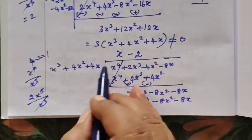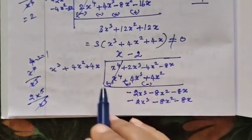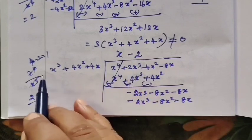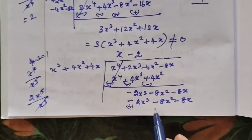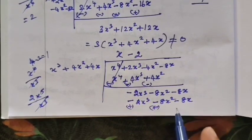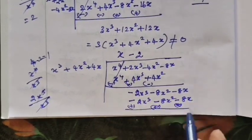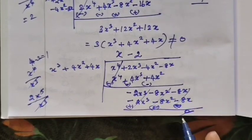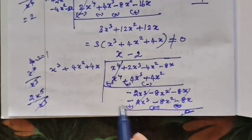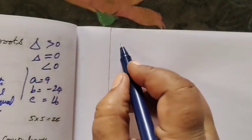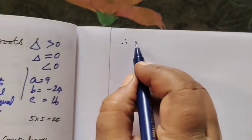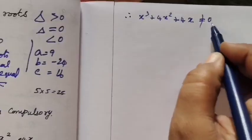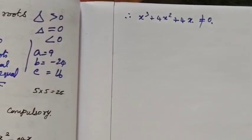Minus into plus is minus, minus into plus is minus, minus into plus is minus. So the sign changes. All of these are 0, it will cancel. The remainder is 0. That is the answer. Therefore x cube plus 0 is not equal to 0.